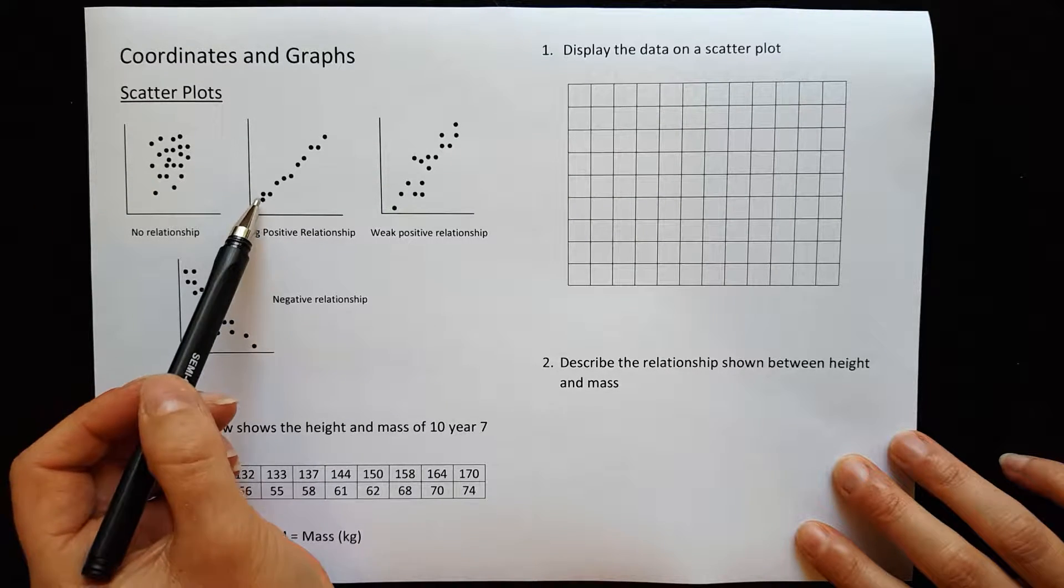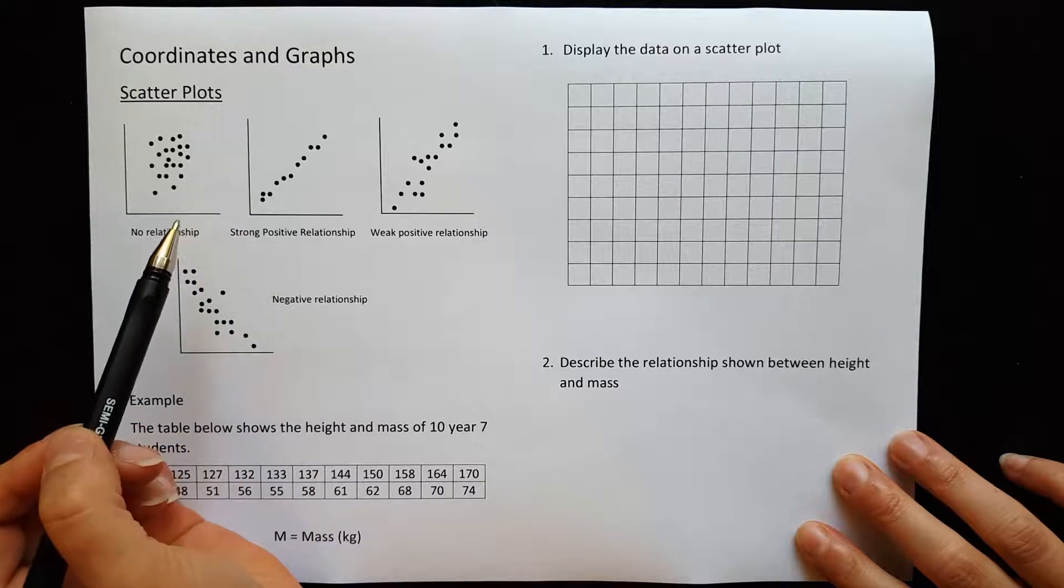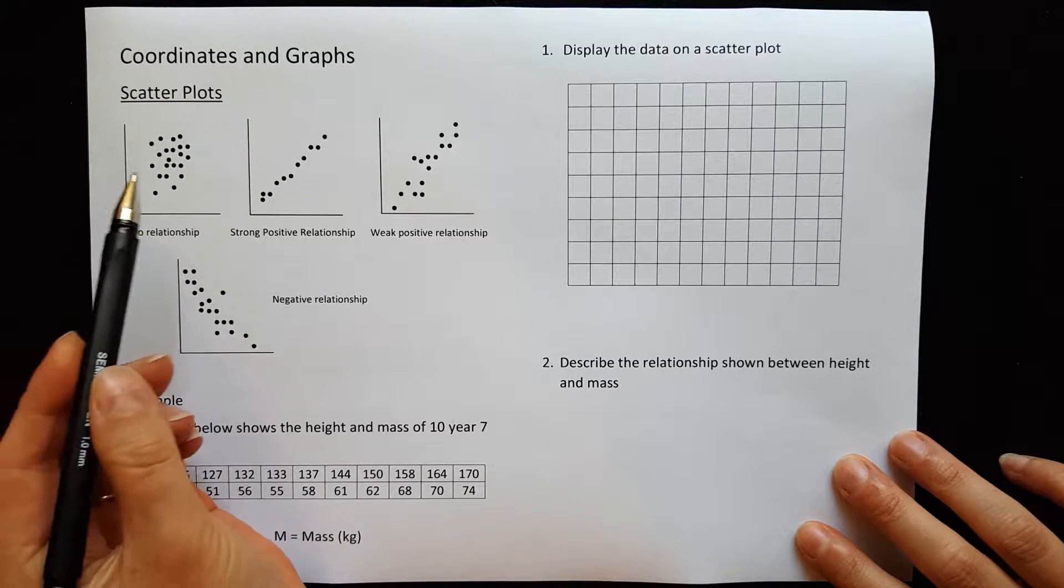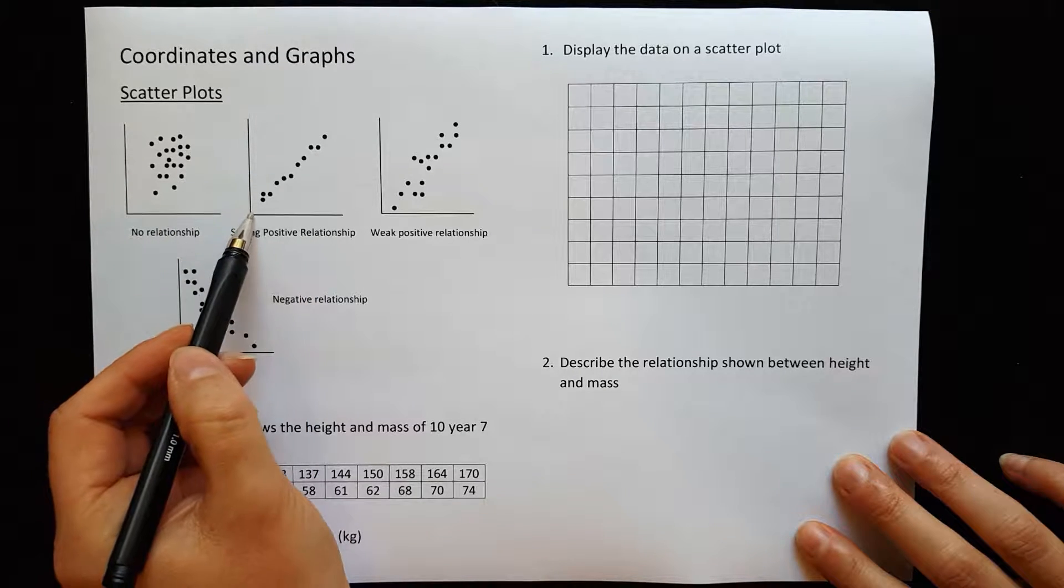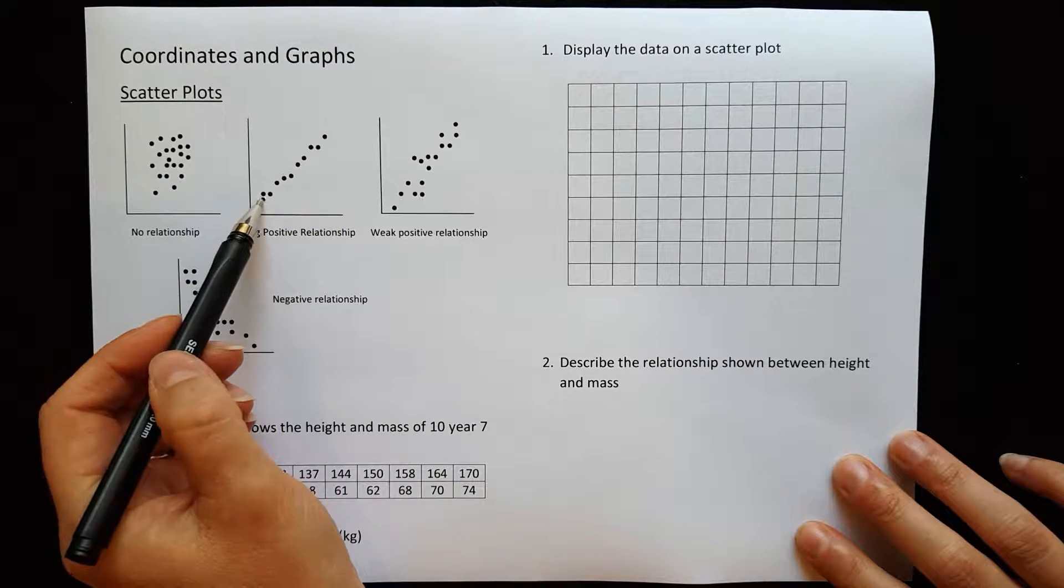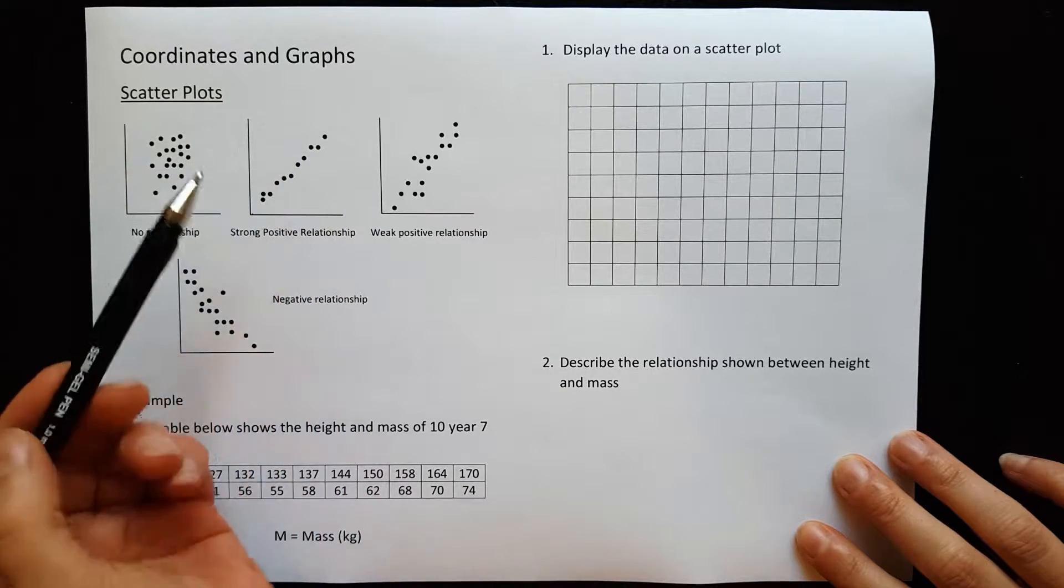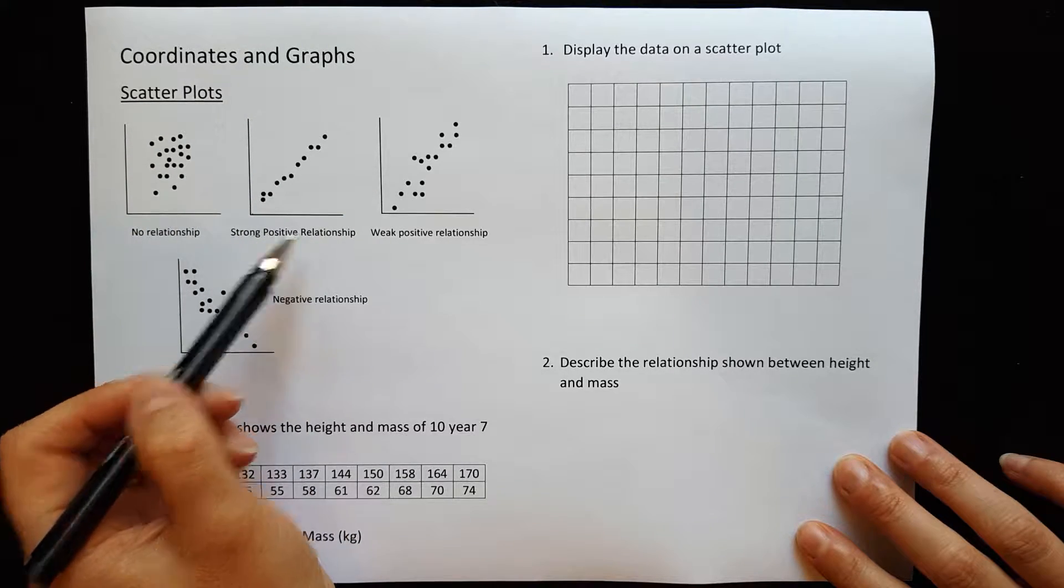When they line up really well, maybe not perfectly but really well, they're almost in a straight line. We would call that a strong relationship, and because as this one is increasing, this one is increasing, we call that a positive relationship. They're both increasing together. So that's a strong positive relationship.